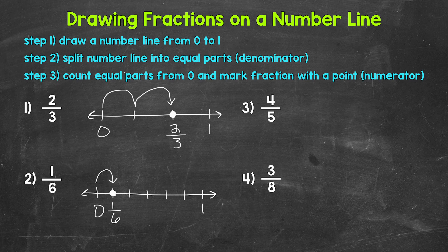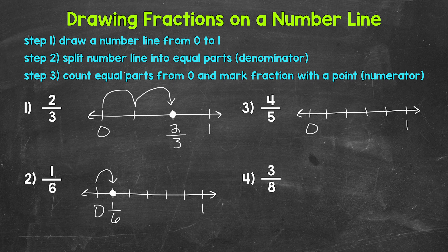Let's move on to number three, where we have four fifths. First, we need our number line from zero to one. Next, we need to split the number line into equal parts. Our denominator is five, so we need five in total: one, two, three, four, and five equal parts.